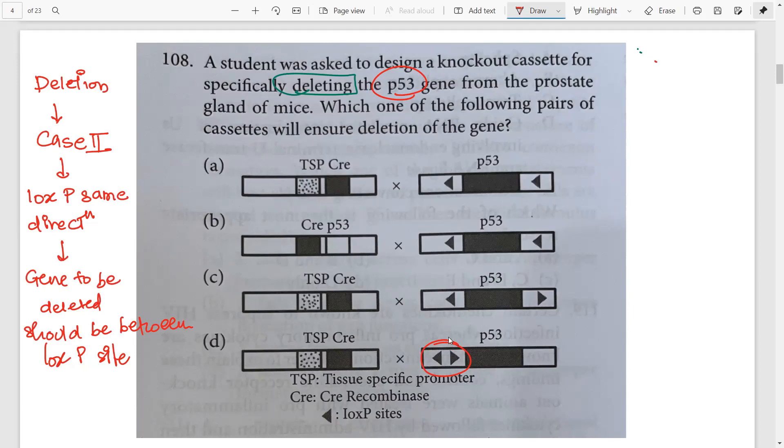Keeping this in mind, we can delete options. Look at option B—the LOXP sites are in opposite direction, so it will cause inversion. Even if you don't remember that, there is no gene in the middle. Options A, B, and C look correct because all have p53 in the center. Now look at the orientation.